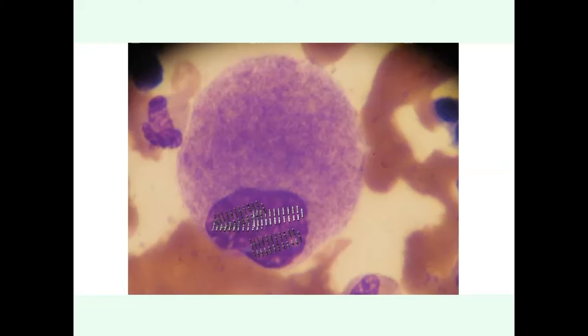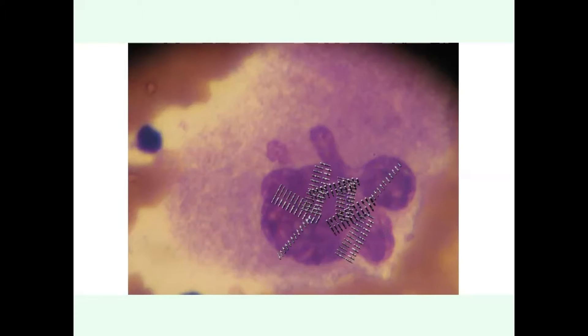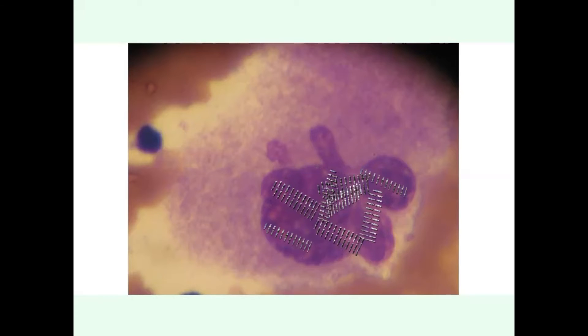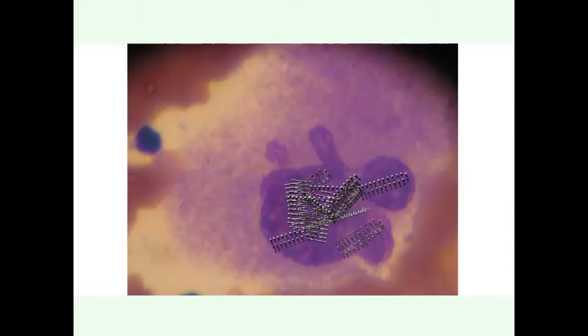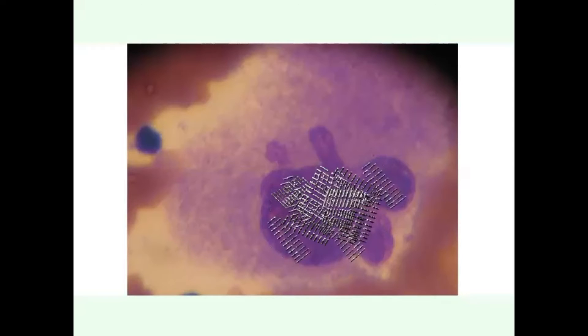They can be tetraploid with four copies of each chromosome in one nucleus. They can be octoploid with eight copies of each chromosome in a nucleus. They can also have 16, 32, or even 64 copies of each chromosome per nucleus.